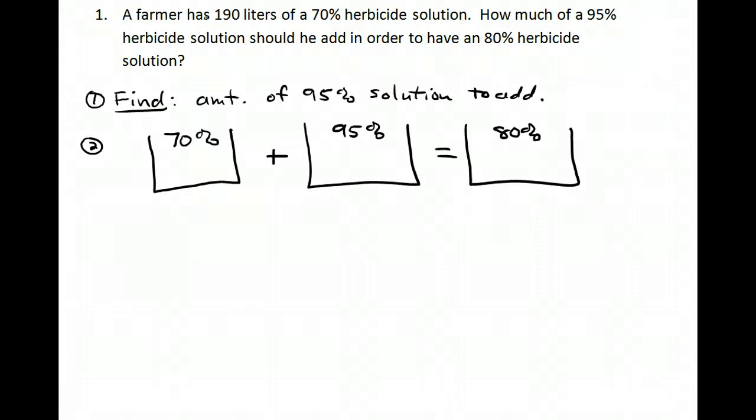In the bottom of the bucket we put how much we have. We're told that we have 190 liters of the 70% solution, so I'm going to put 190 here. I don't know how much of the 95%, that's my unknown, that's my x. If I add 190 plus x, I've got 190 plus x for the bottom of my mixture bucket.